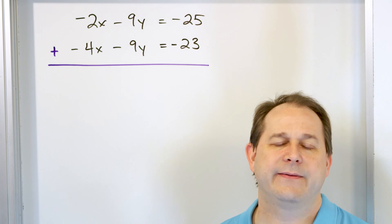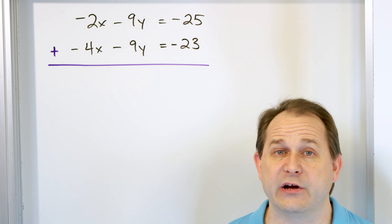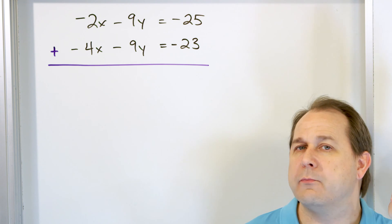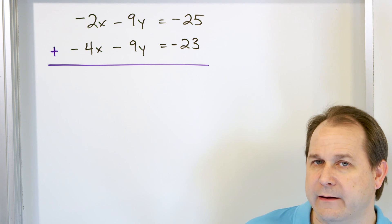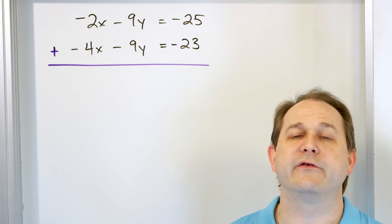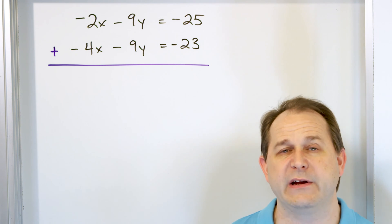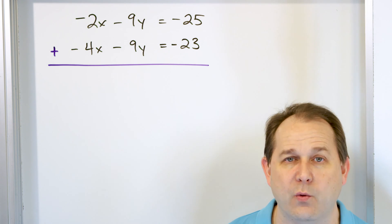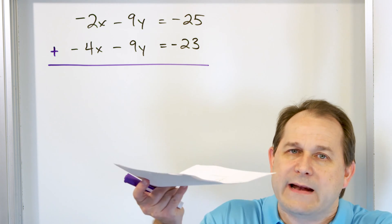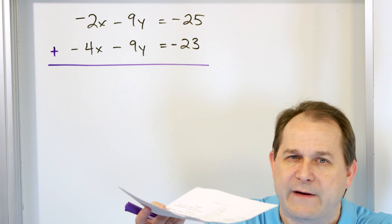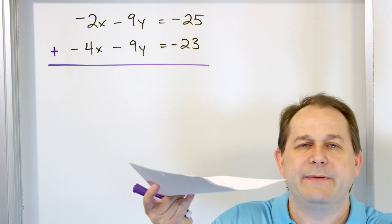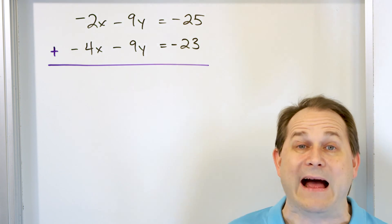You can add things to both sides of an equation, you could subtract, you can also multiply both sides by anything you want, and you can also divide both sides by anything you want. That's legal. We know that multiplying or dividing both sides keeps the equation balanced.